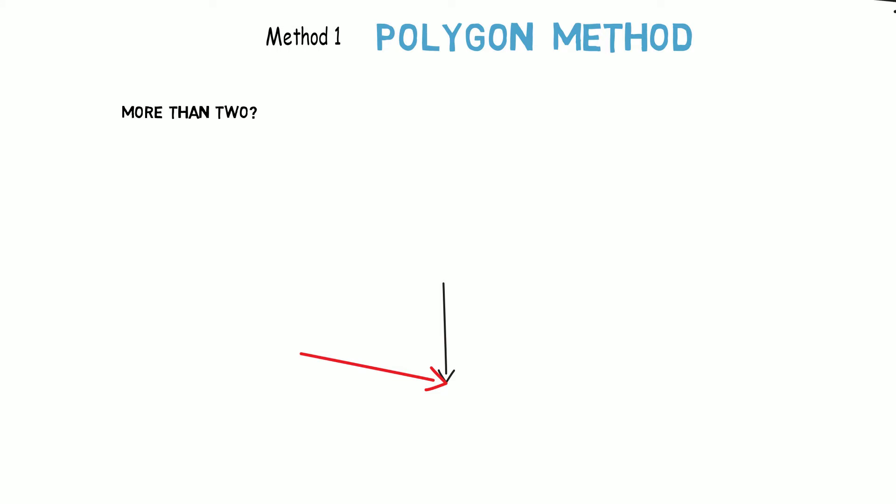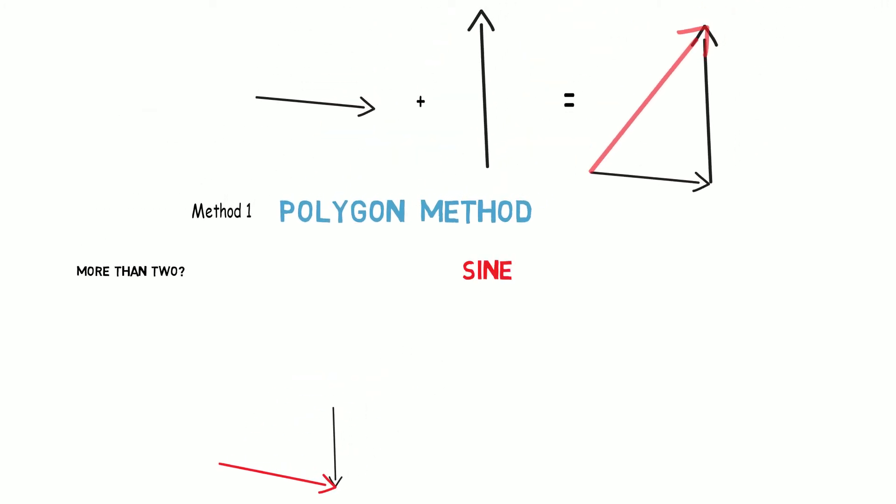For calculating the magnitude, use of sine law and cosine law is sufficient, where the length is taken proportional to the vector quantity and the direction can be obtained by simply calculating the angles between the triangular sides.